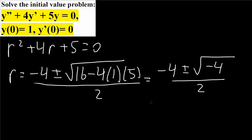Negative 4 divided by 2 is negative 2. The square root of negative 4 is plus or minus 2i, so we get plus or minus i.